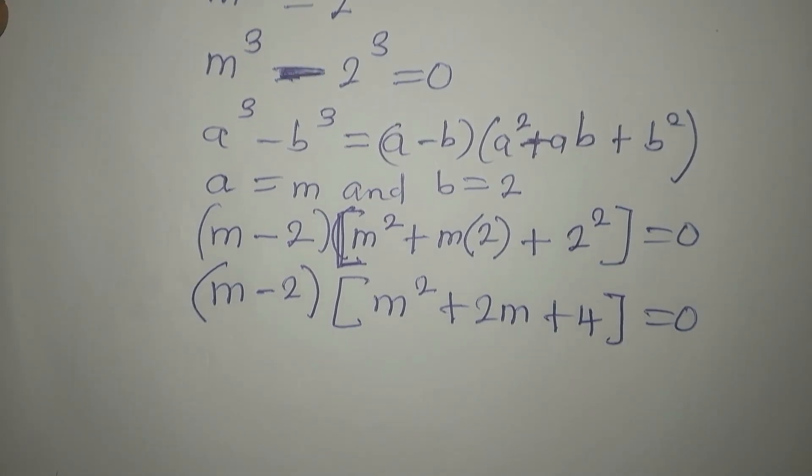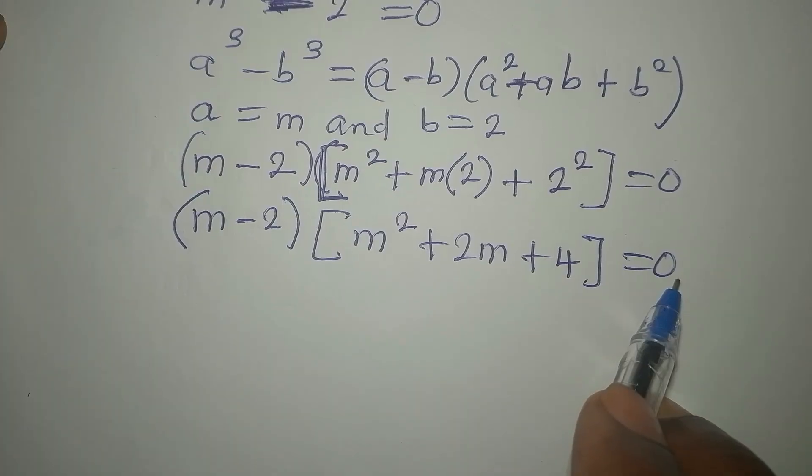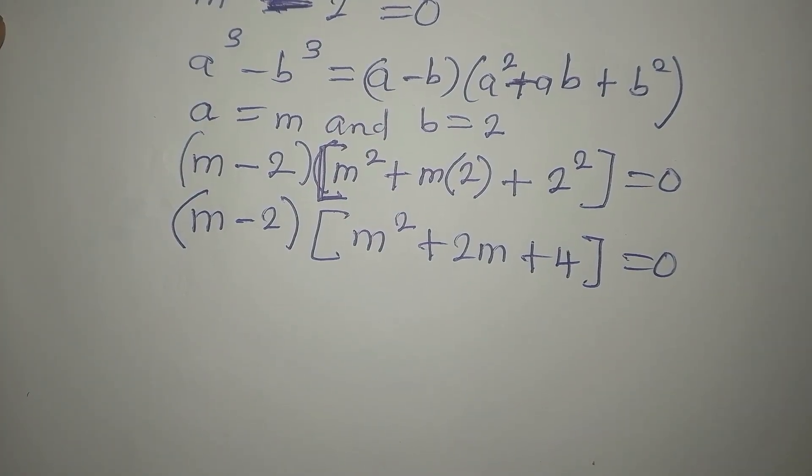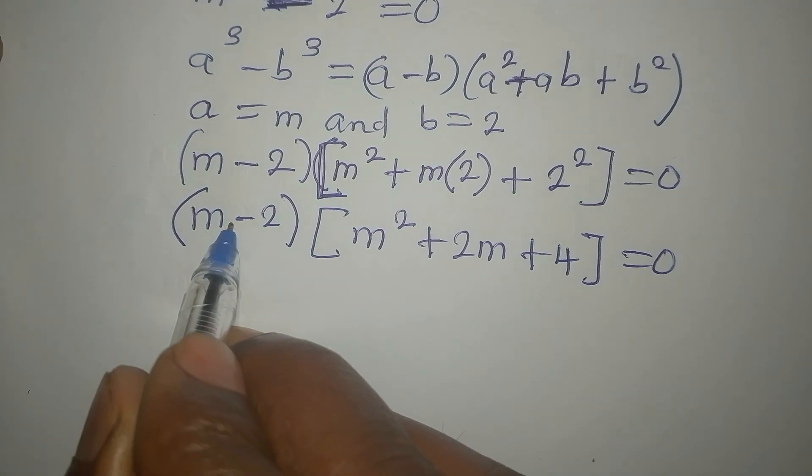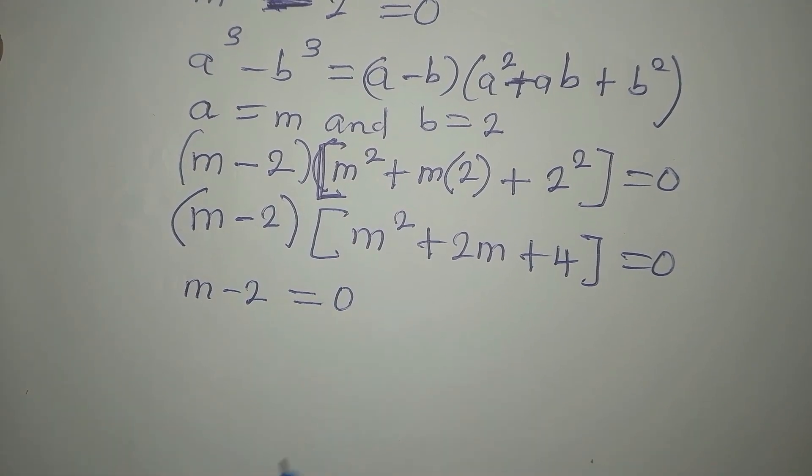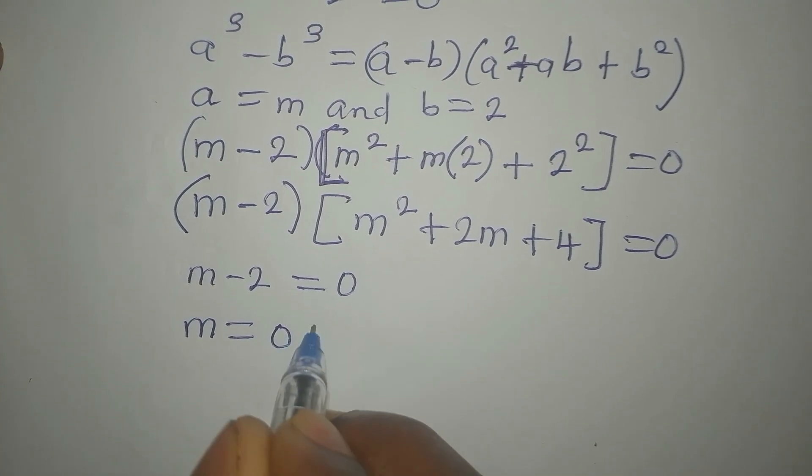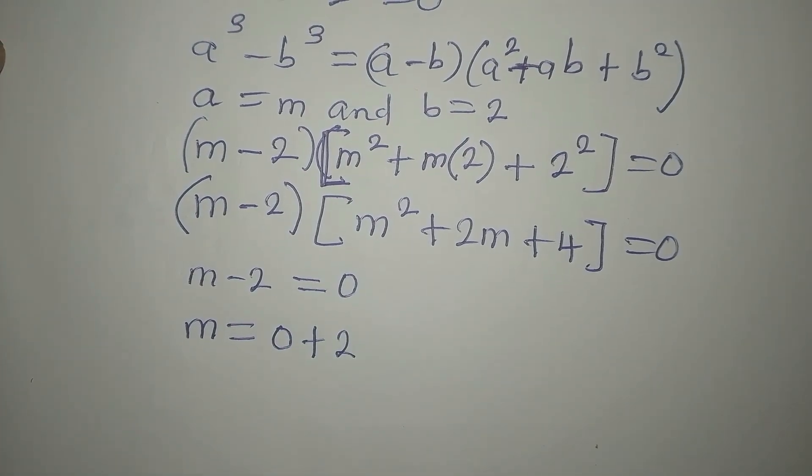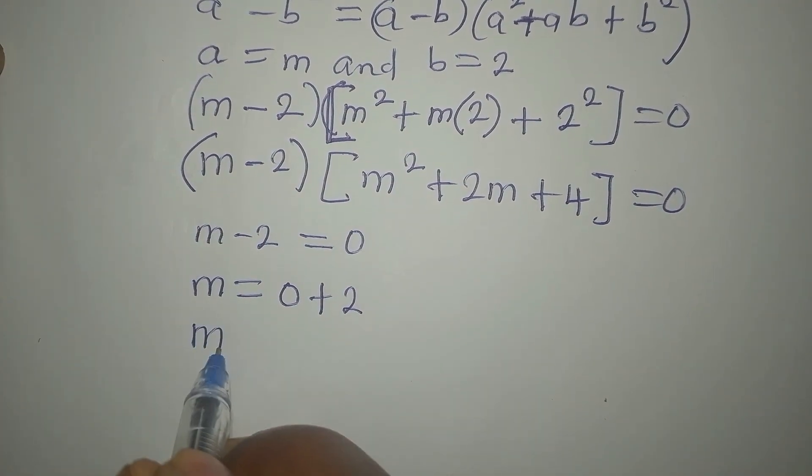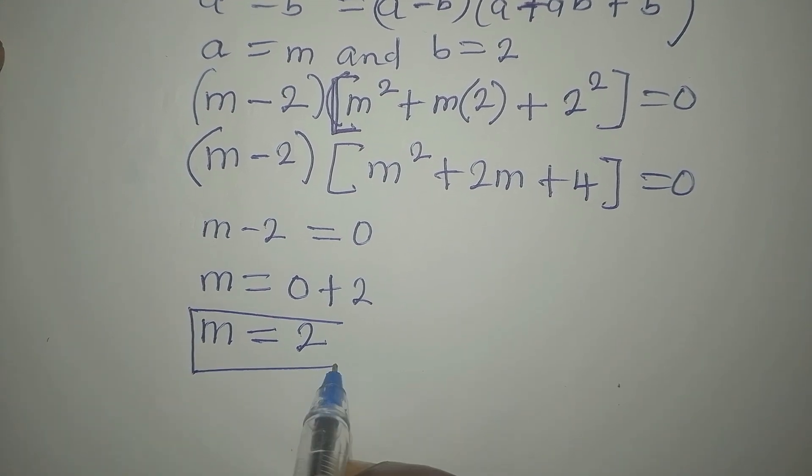Now from here, we discover that we are multiplying these two factors to get 0. So either of them or both of them must be equal to 0. So we begin with this. Our m minus 2 should be equal to 0. And this means that m is equal to 0 plus 2 as we add the additive inverse of minus 2. So m is equal to 2, and this is a real solution.